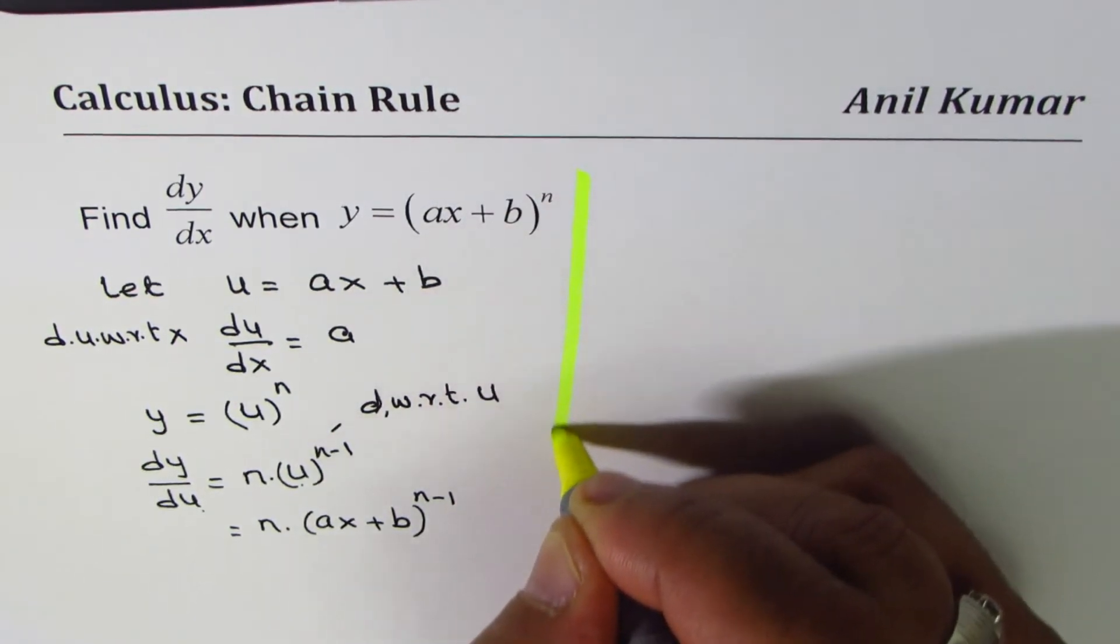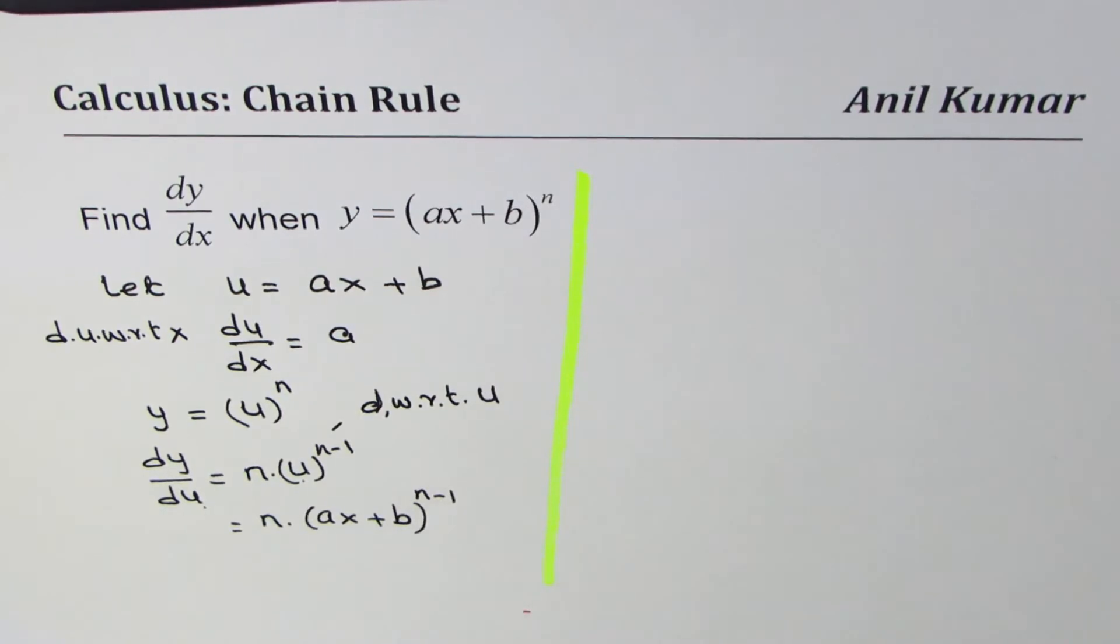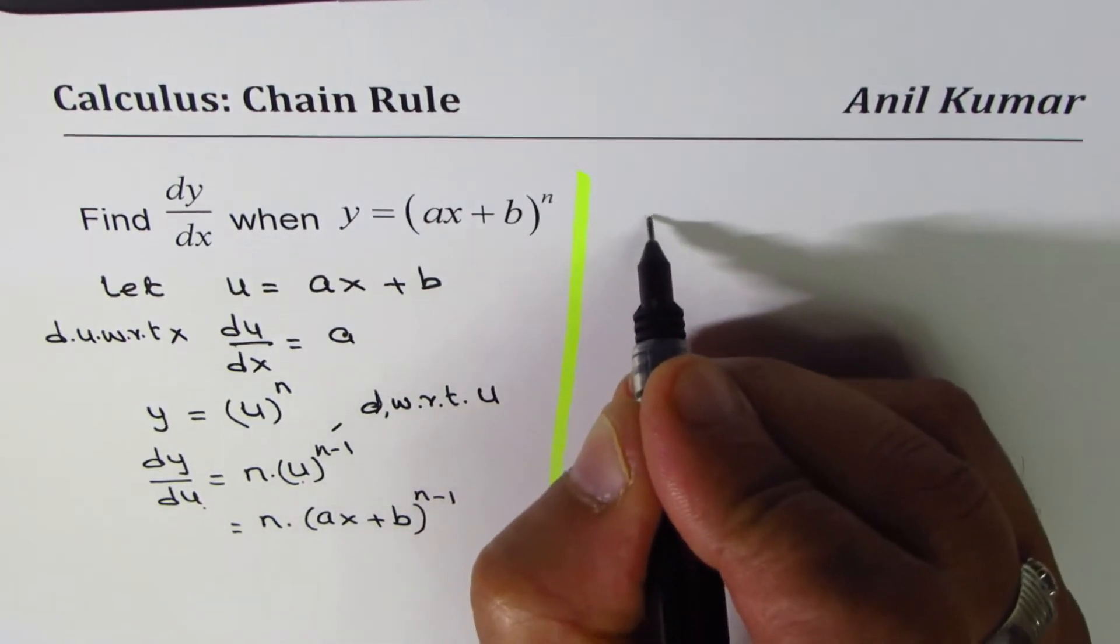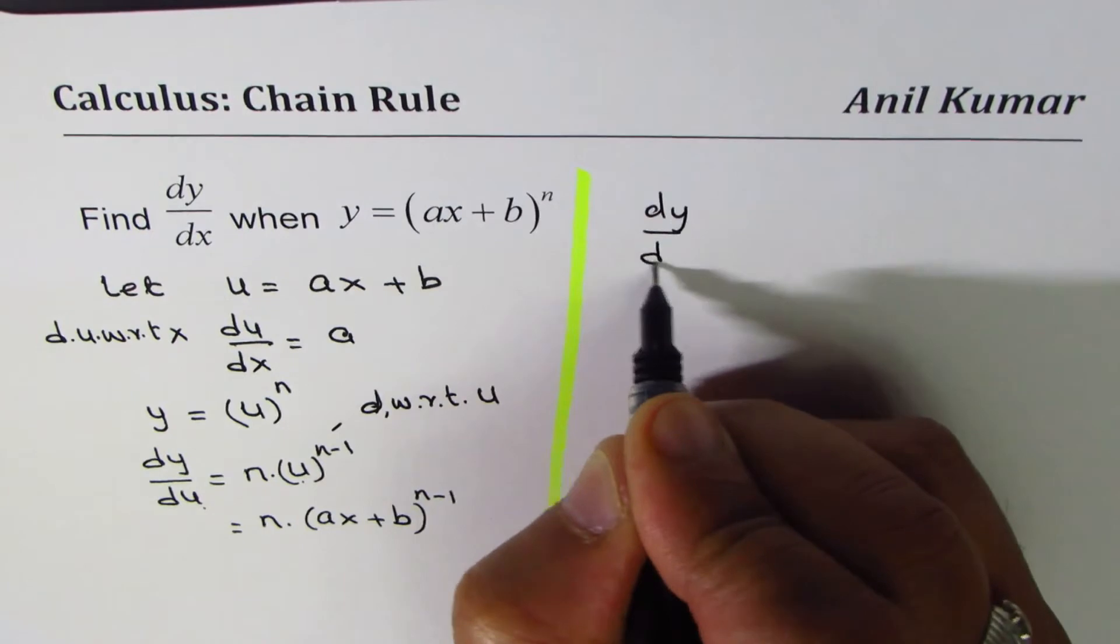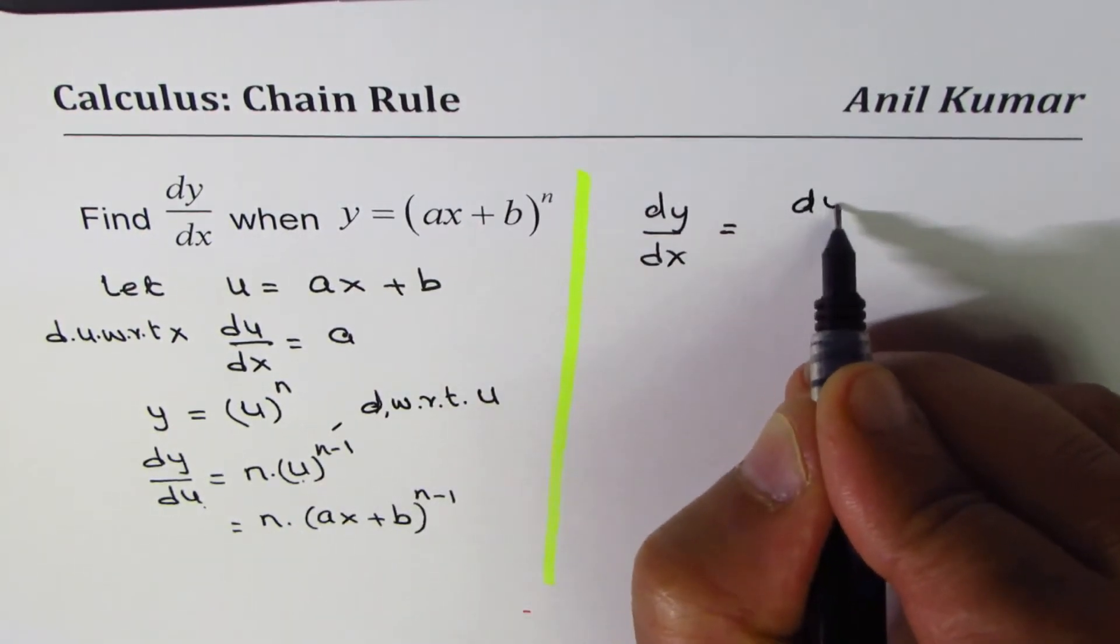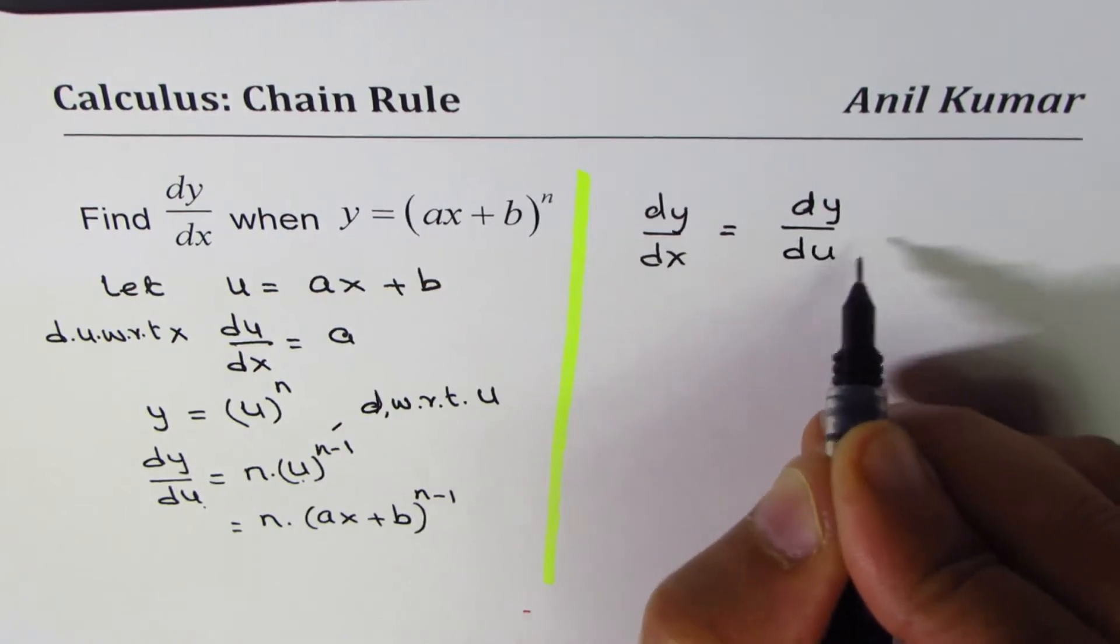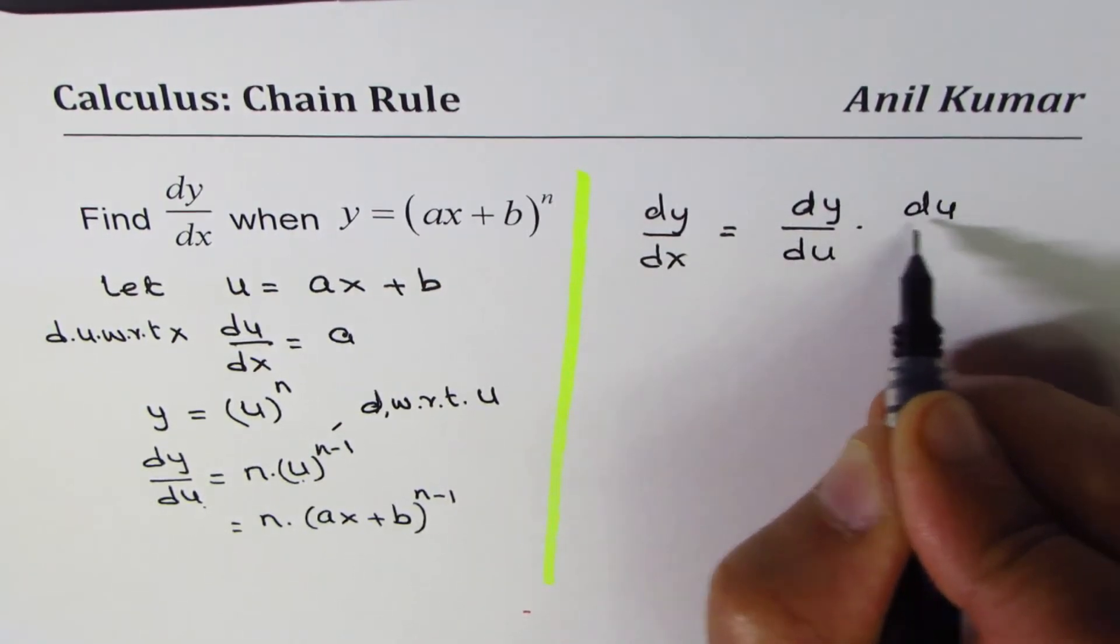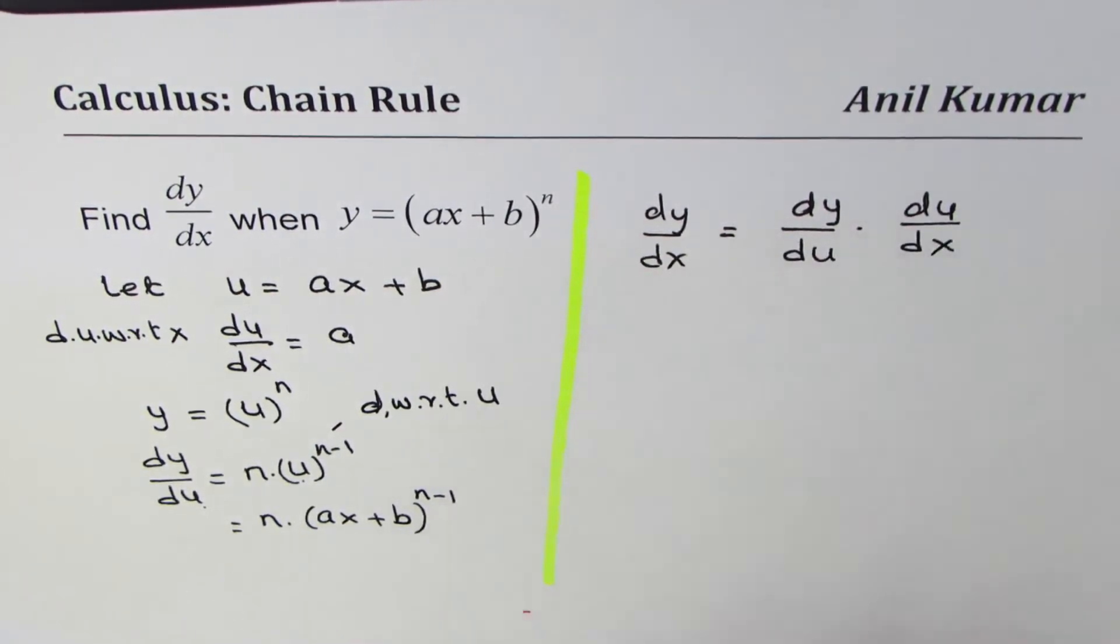Now the question is to find dy/dx. So we have to find what is dy/dx. Now, as per the chain rule, dy/dx could be written as dy/du times du/dx.